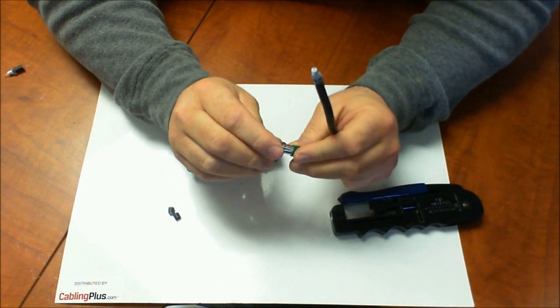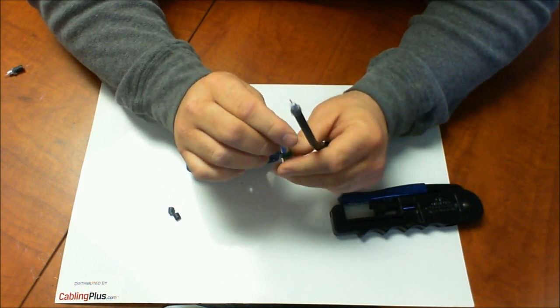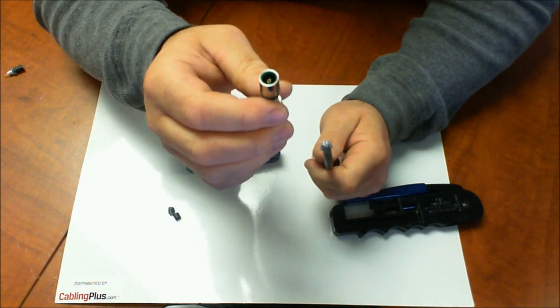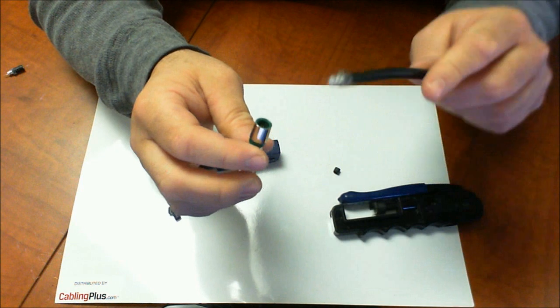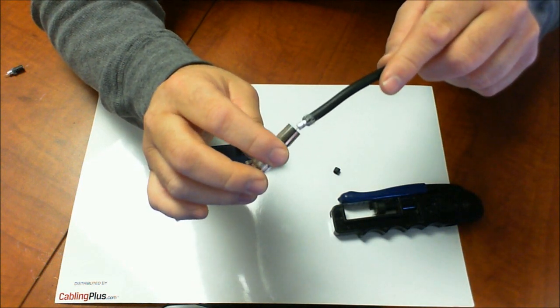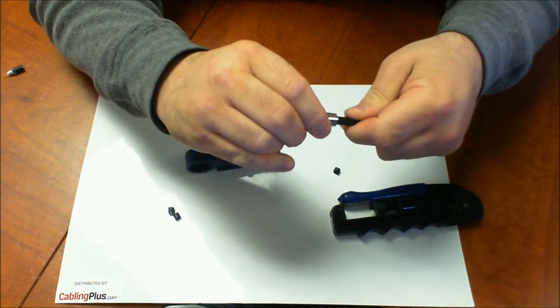Now what's unique about this BNC connector, they have a no-blind entry system, which makes it really simple to terminate it. If you look in there, you see that little ferrule, and I'm just going to put the center conductor right in that little sleeve, and then just push it right down.